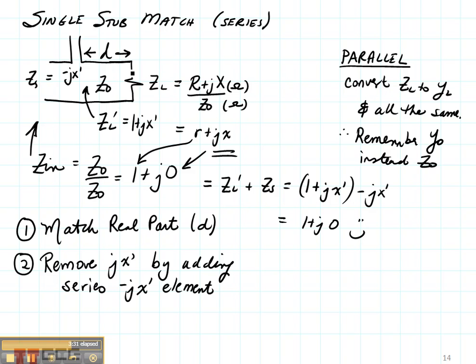That's this transmission line right here that has a strictly imaginary part, and that we can design its length and its load open circuit or short circuit so that we get the desired impedance at the front, which is this zs right here, the minus jx prime term.